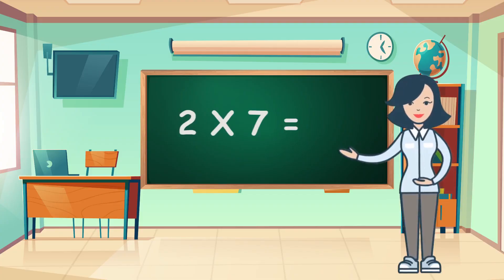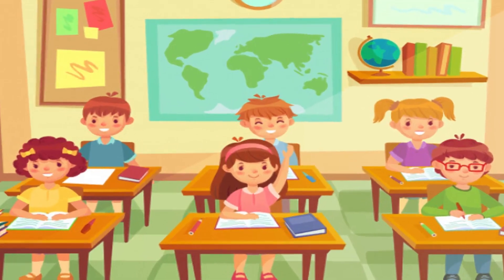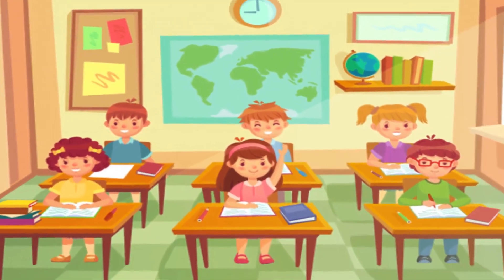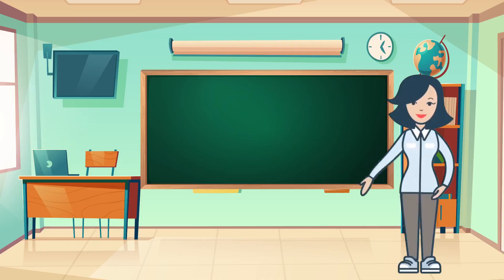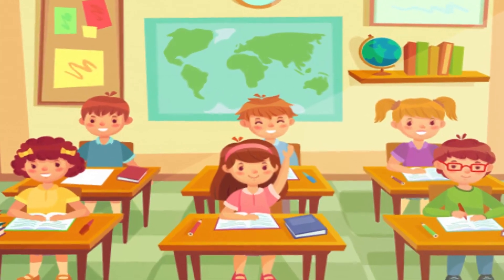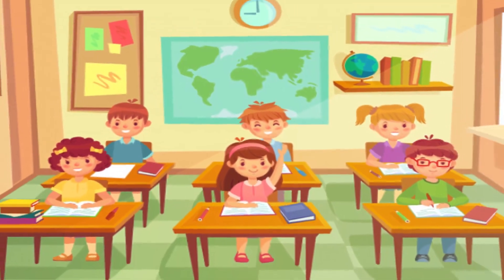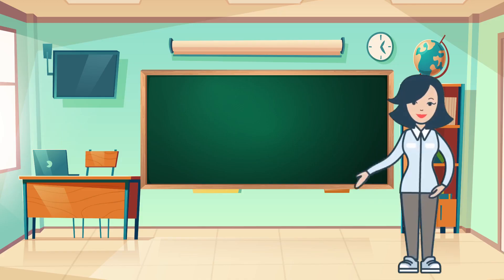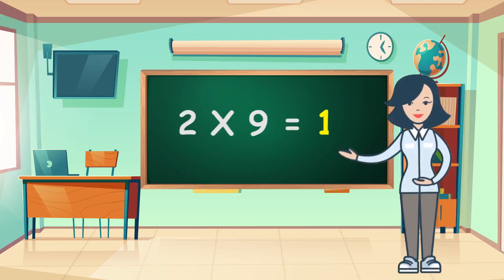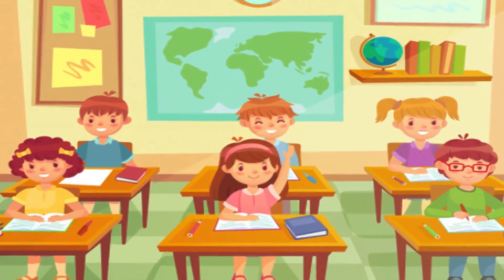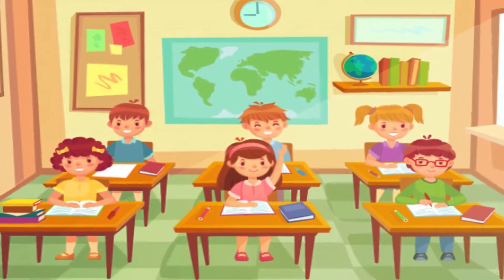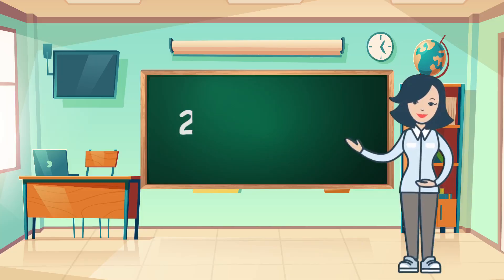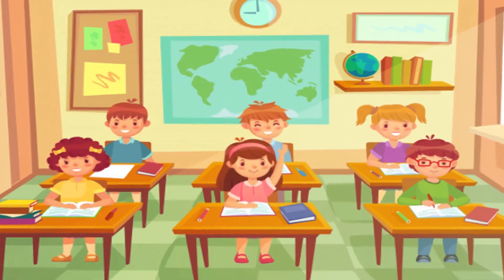Two sevens are fourteen. Two sevens are fourteen. Two eights are sixteen. Two nines are eighteen. Two tens are twenty.